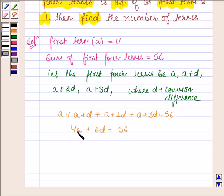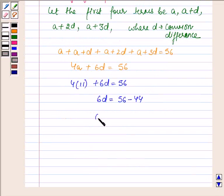Now A is 11. So on substituting 11, we have 4 into 11 plus 6D is equal to 56, or 6D is equal to 56 minus 44. So 6D is equal to 12, or D is equal to 2. So our common difference is 2. Let this be equation number 1.